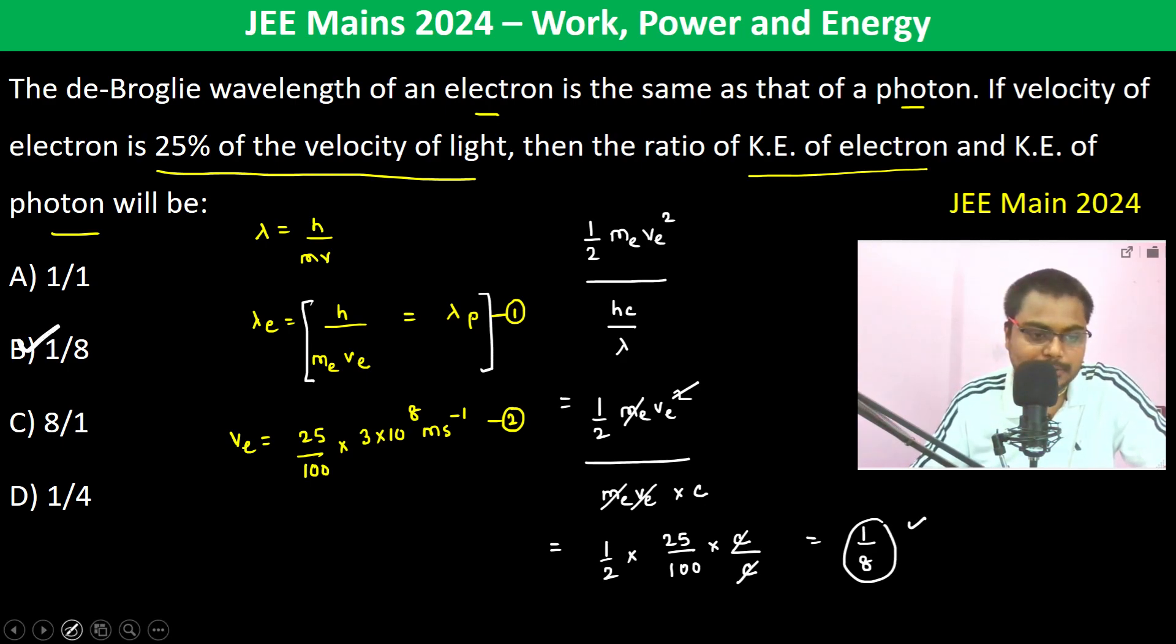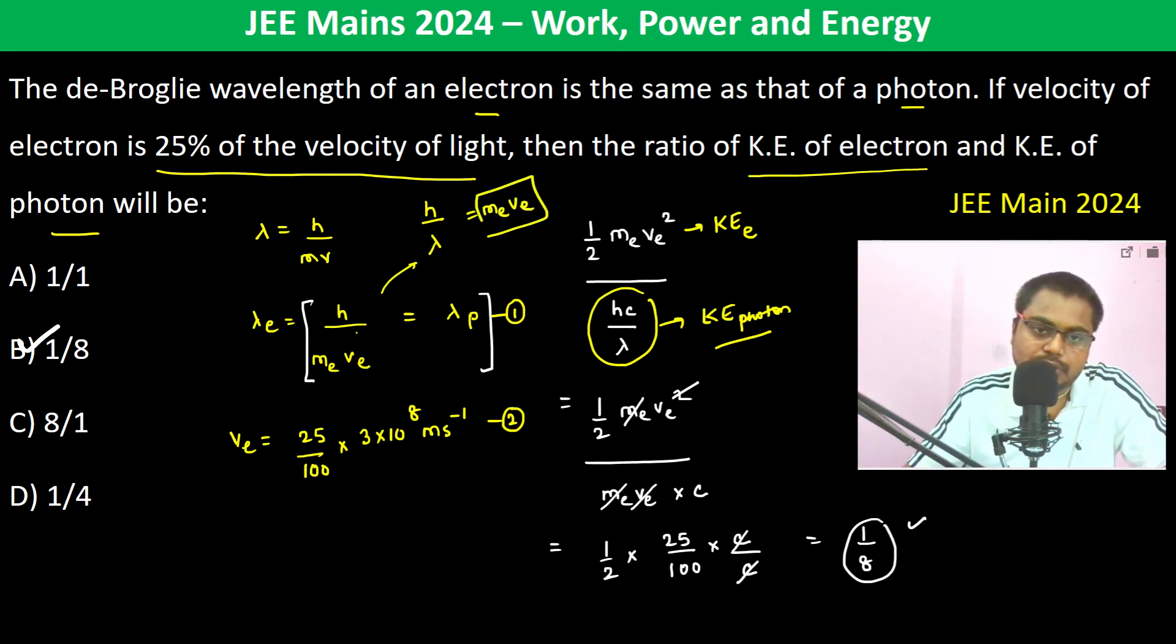What we did here is this is the kinetic energy of electron, this is the kinetic energy of photon. Kinetic energy of photon is hc by lambda. We substituted h by lambda as m_e v_e because it's already mentioned. Then c was remaining so we multiplied it by c. That's how we solved it.